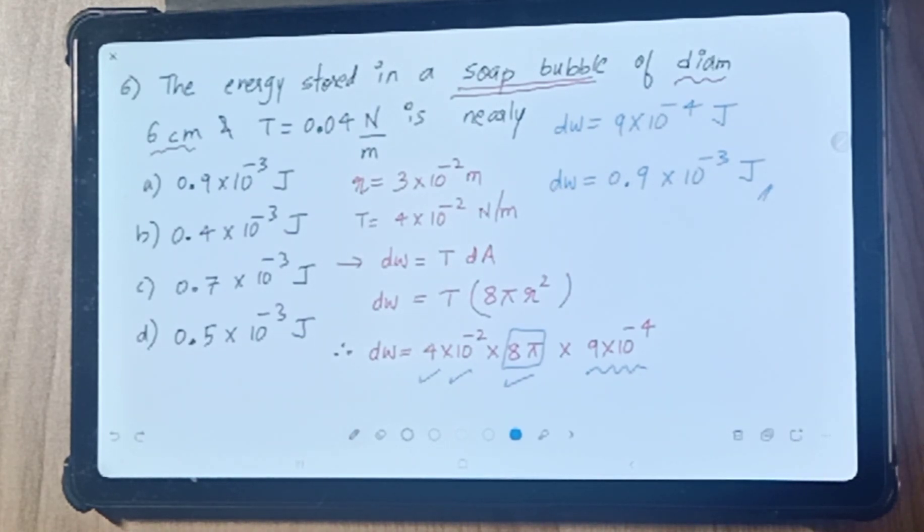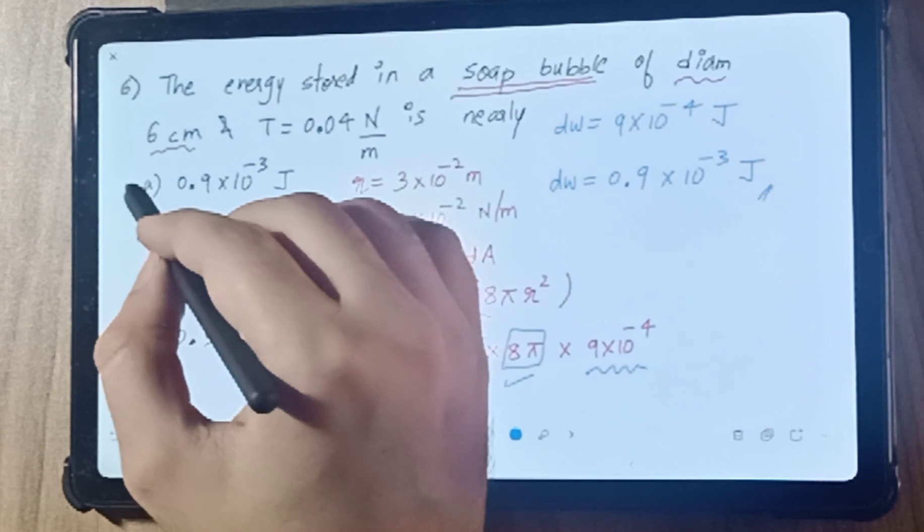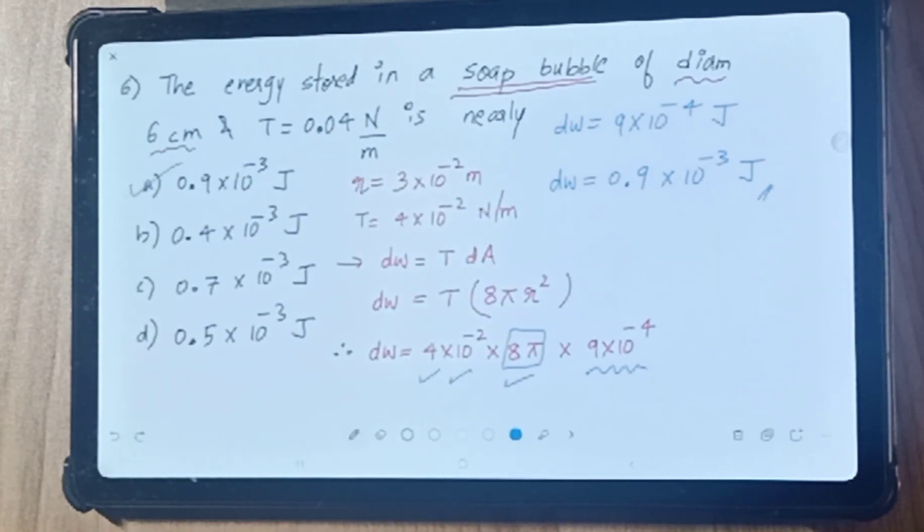DW, the required energy stored, equals 0.9 × 10⁻³ joule. Let's finish this - answer is A.